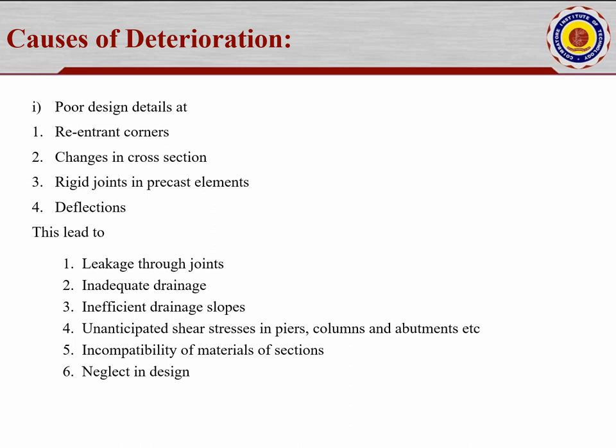Rigid elements: because it is fixed, it may experience more stresses, shrinkage, expansion and contraction, again leading to deterioration. Deflection due to overloading or failures may also happen. These above points lead to leakage through joints — if corners are not finished or joined properly, leakage appears. Inadequate drainage: drainage gets stuck, inefficient drainage slopes, and unanticipated shear stress in piers, columns, abutments, and comparative material sections — these all lead to neglect in the design.